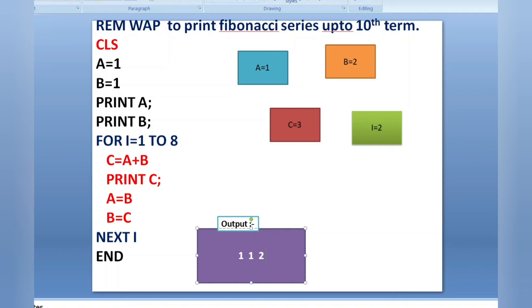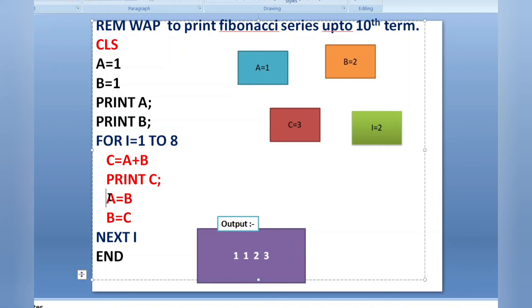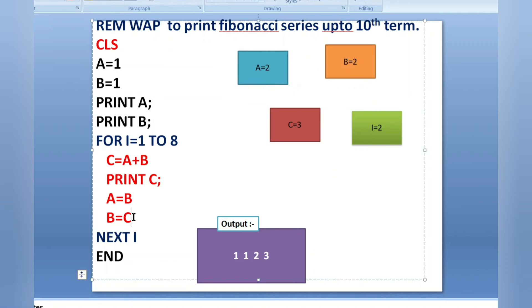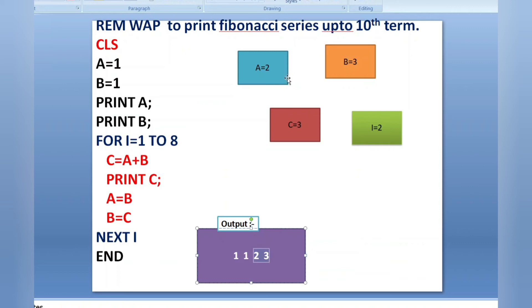3 is printed — correct, because addition of the last two digits gives the next number. Now for the next iteration we need 3 plus 2, but A and B hold 1 and 2, so again we update: A equals B (A becomes 2), then B equals C (B becomes 3). Now A is 2 and B is 3 — the last two values.